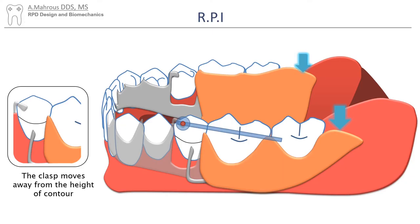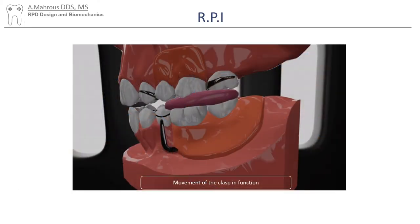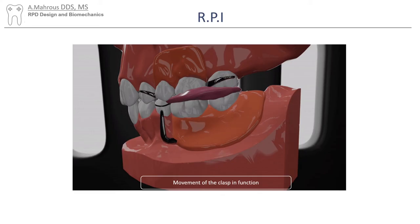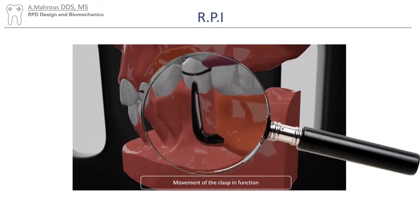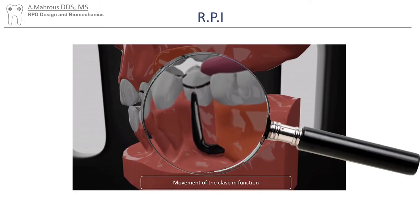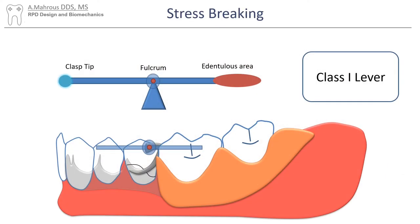This is called stress breaking. You can see it here in this animation of an RPI clasp during function. Notice how when the patient bites down, the clasp moves downwards and disengages from the undercut. Now let's look at the problem from the lever arm perspective. The problem occurs when the fulcrum line is between the edentulous span and the clasp tip. In physics, they call this arrangement a Class 1 lever.